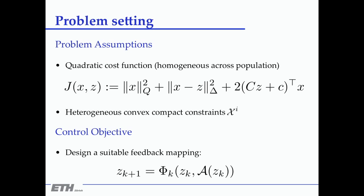There are some technical conditions to make the whole thing work — not strictly necessary but useful. Usually you assume a convex quadratic cost with a linear term, and there's a question of what you put for Q and delta. Generally you have heterogeneous compact convex constraints on x. The question is how to design a scheme to help them coordinate.